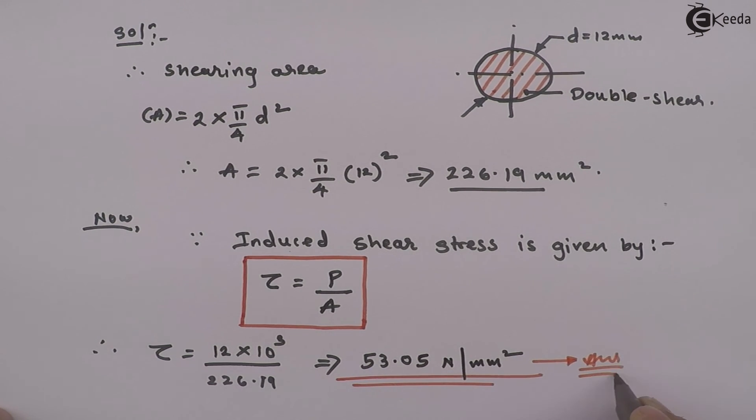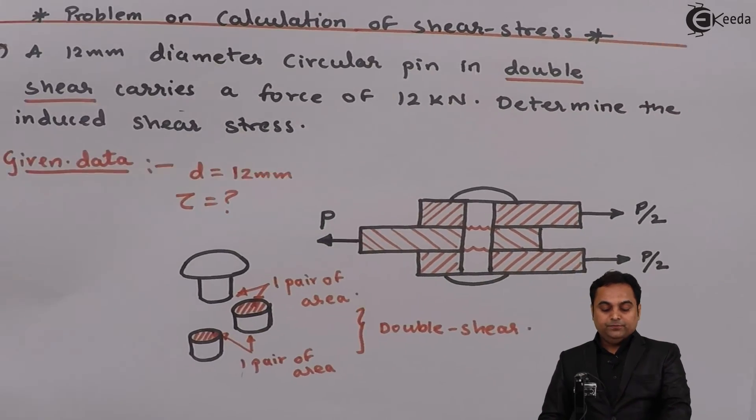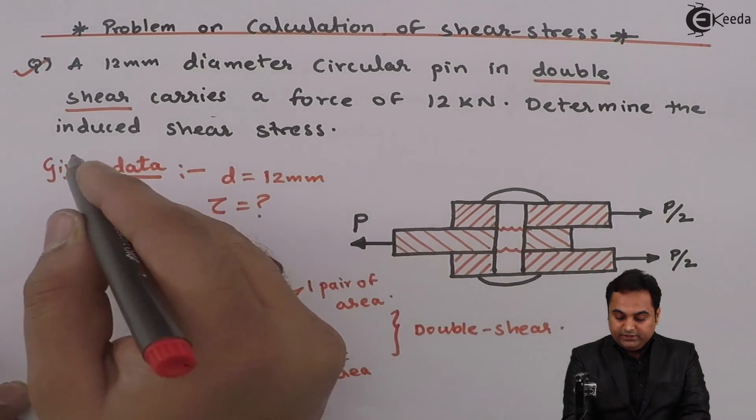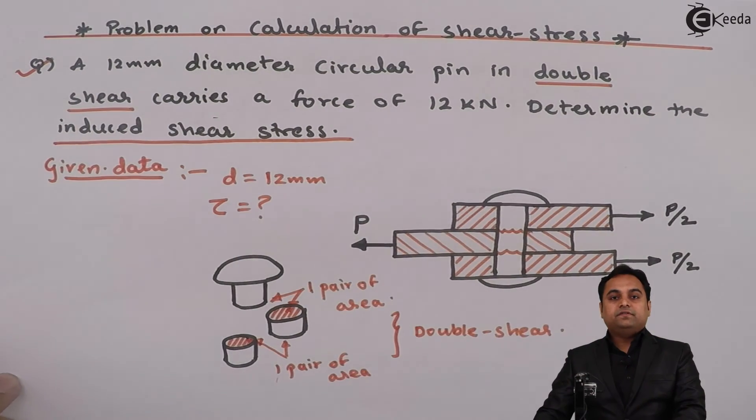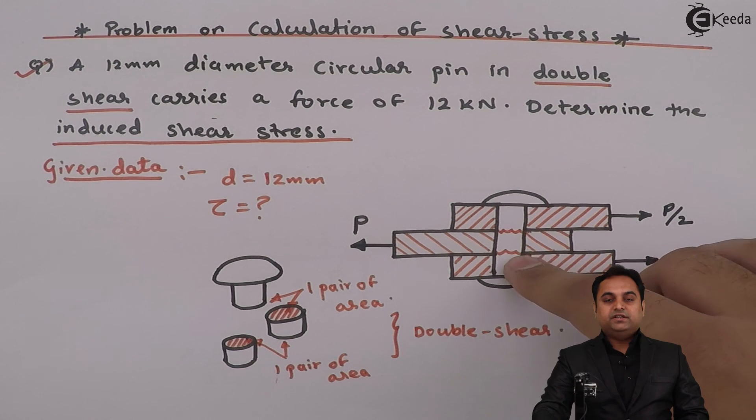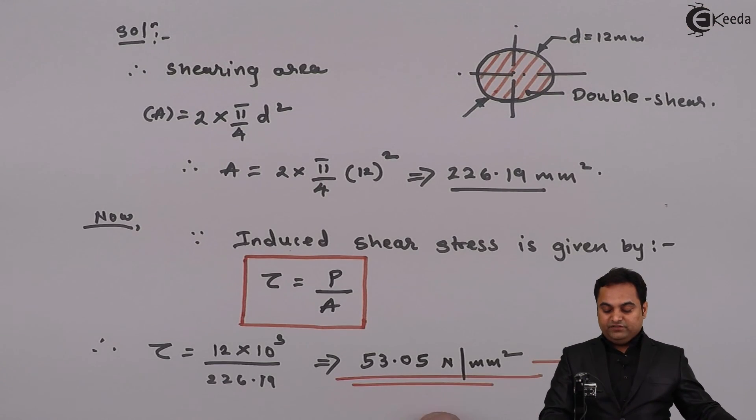As we have seen in this problem, the question was to calculate the induced shear stress, and this induced shear stress which is there in this pin or rivet we have found out is 53.05 Newton per mm squared. With this we complete the question.